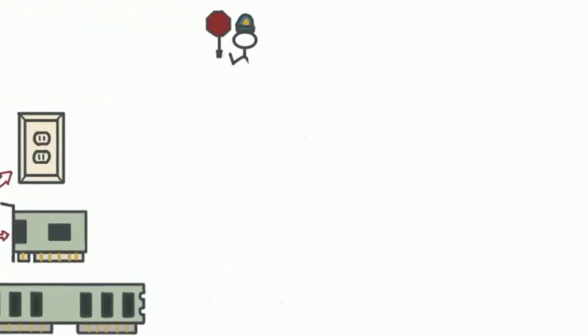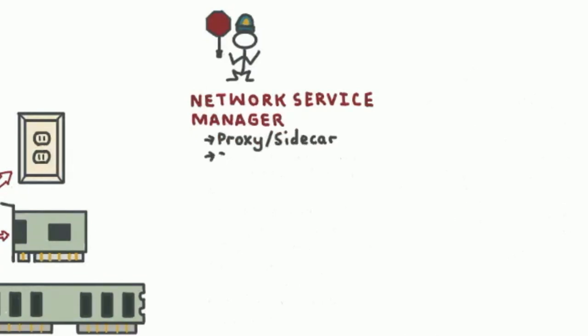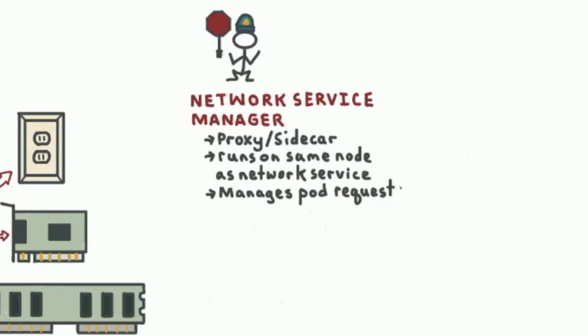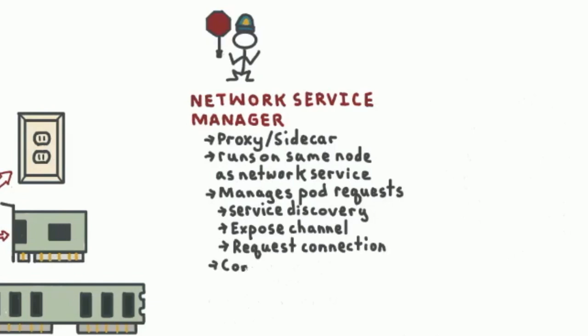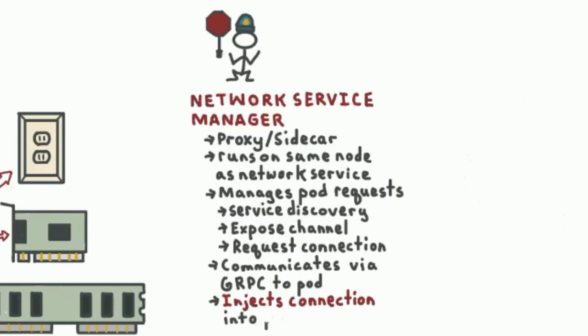We're in a greenfield situation. We can introduce a network service manager running as a daemon set, so it runs on the same node. When a pod wants to do service discovery, it can send a service discovery request, expose a channel, or request a connection by sending those requests to the network service manager. You want to send those over gRPC over a Unix file socket mounted into the pod. The network service manager then injects the requested connection or channel into the pod — effectively, the network service manager becomes our proxy or sidecar here.